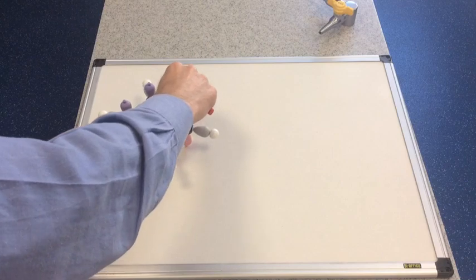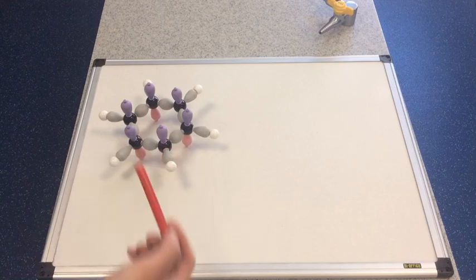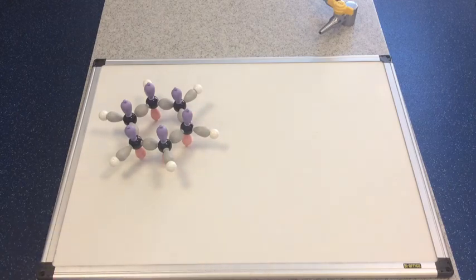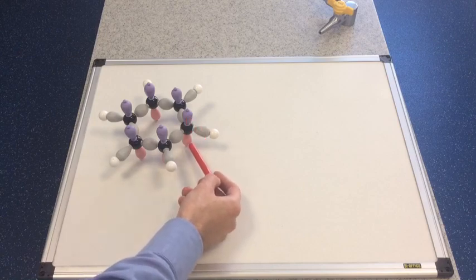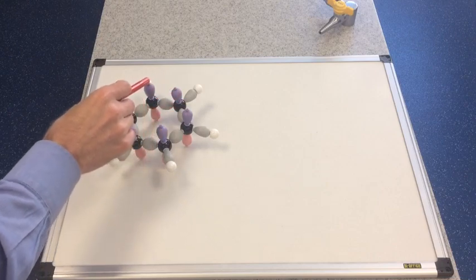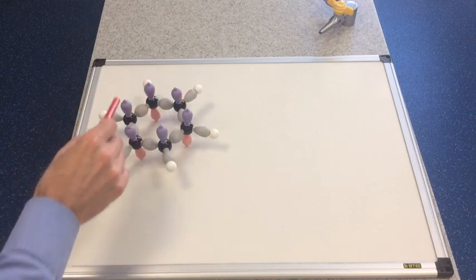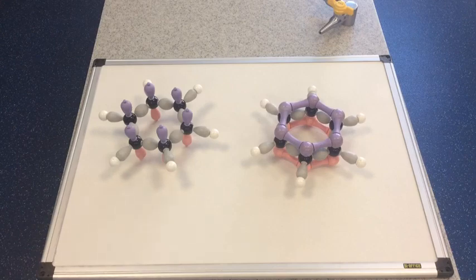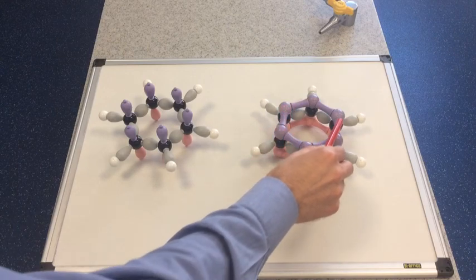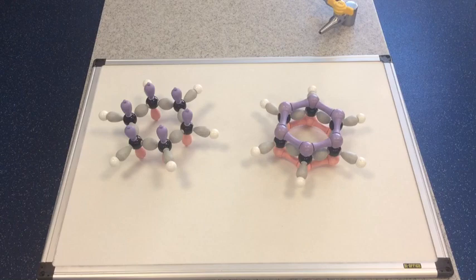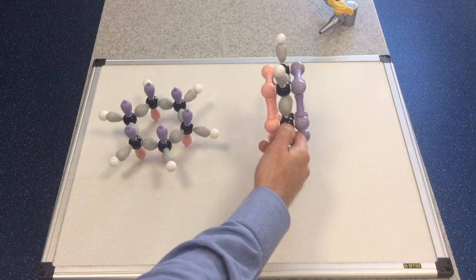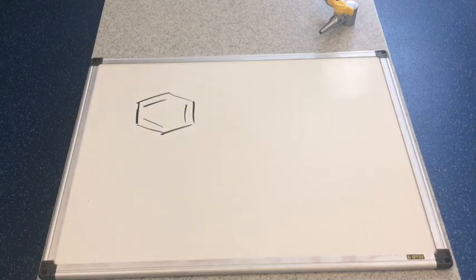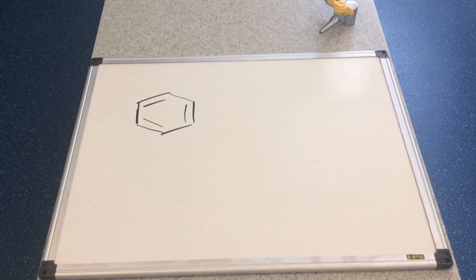Now just in case my diagrams were a little bit too messy for you to follow, we've got these nice models to show you. We've got the six carbons and remember each carbon forms three sigma bonds, one, two, three, and the fourth electron is in this p orbital. There's the upper lobe in purple and the lower lobe in pink. These orbitals, these lobes overlap and form the pi electron cloud above and below the ring. So the six electrons are orbiting in this new region of space, this new orbital formed by the overlap of the p orbitals. You can see also quite nicely that the ring is actually planar, it's flat.